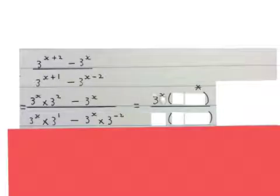So the top we pulled out a common factor 3 to the power of x. Then you ask 3 to the power of x times what will give me this term? The answer is 3 to the power of 2. Then you ask 3 to the power of x times what will give me this rear term? The answer is minus 1.